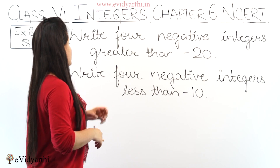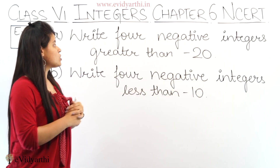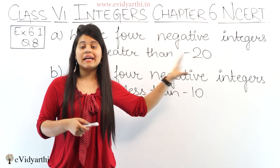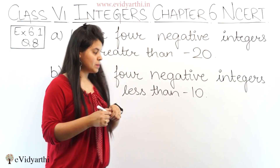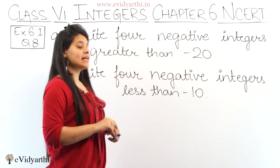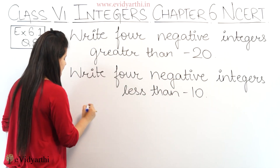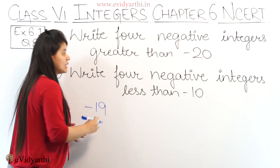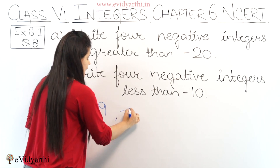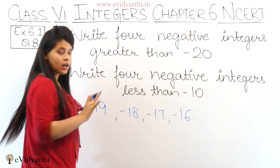In this question we have to write 4 negative integers greater than minus 20. We have to write 4 negative integers which are greater than minus 20, meaning bigger numbers. We need to know that the number is small — greater than means if it is minus 20, so minus 19 is greater than minus 20. Similarly it can be minus 18, minus 17, minus 16.